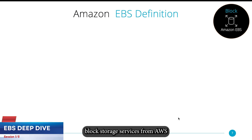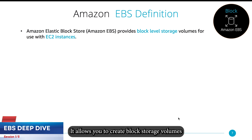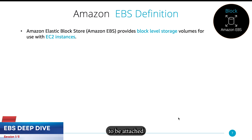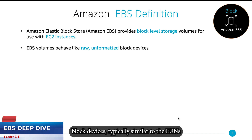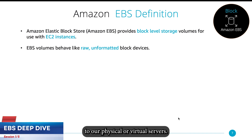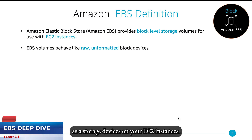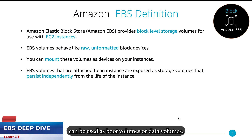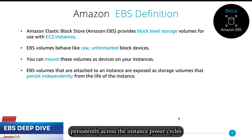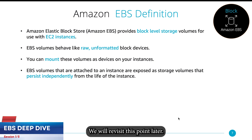Amazon EBS is one of the block storage services from AWS. It allows you to create block storage volumes to be attached to your EC2 compute instances. These volumes behave like raw, unformatted block devices — typically similar to the LUNs or storage volumes created over SAN arrays to be presented to physical or virtual servers. These volumes are mounted as storage devices on your EC2 instances and can be used as boot volumes or data volumes. These volumes store data persistently across instance power cycles, and even independently from the lifecycle of the instance itself — we will revisit this point later.